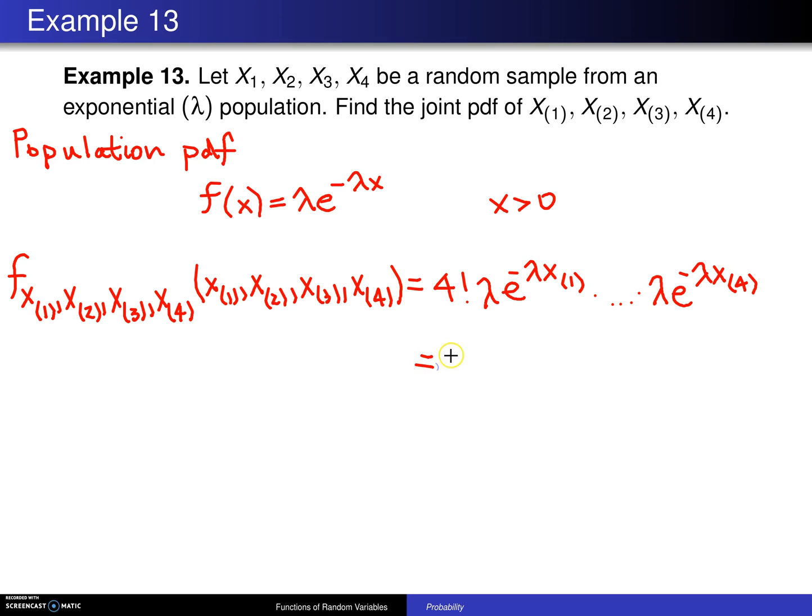And you can simplify a little bit here, the 4 factorial is 24. Lambda is multiplied by itself four times, so we get lambda to the fourth power.